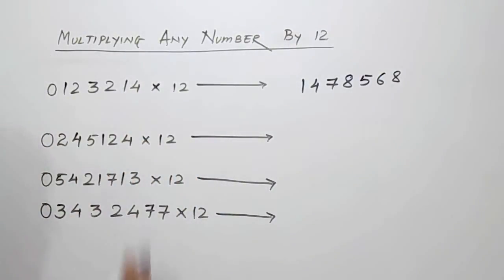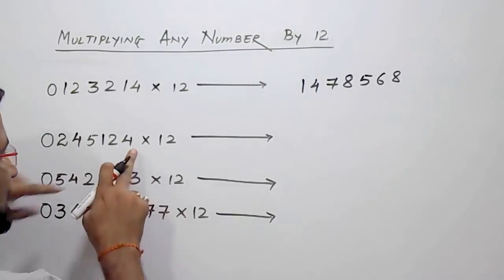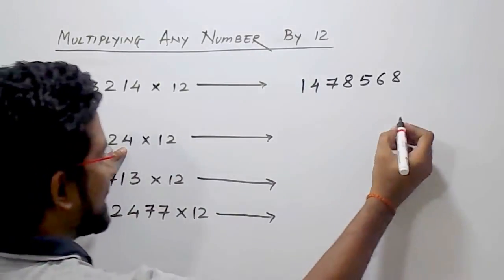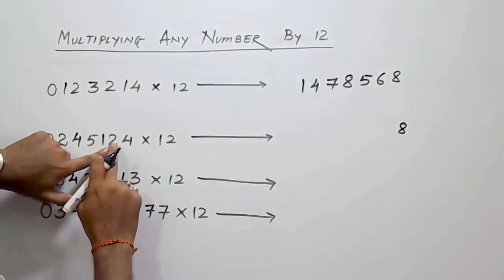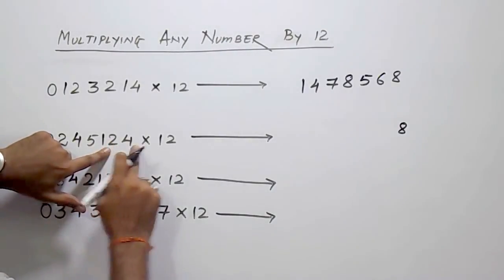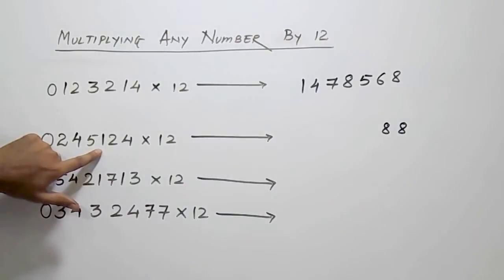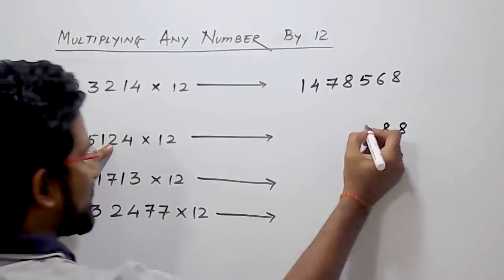Now we will see the next example. Again, the last digit is 4, so 4's double is 8 — write it as it is. Next, 2 — 2's double is 4, 4 plus 4 is 8. Then the next digit is 1 — 1's double is 2, 2 plus 2, that is 4.